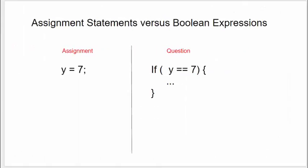This would probably be a good time to discuss the difference between assignment statements and Boolean expressions in Java. On the left, you see an assignment statement y equals 7. What this does is it takes the box that's labeled y and puts a 7 in it.